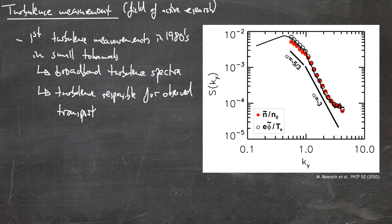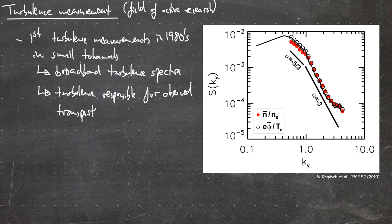The picture on the right-hand side is a spectra of turbulent density and potential fluctuations, measured in the TJK stellarator. You can nicely see in this spectra how a dual cascade is found — what was predicted for a two-dimensional turbulent system. We have the inverse energy cascade here and the direct enstrophy cascade with different slopes. This was measured with Langmuir probes in the TJK stellarator, a low temperature device able to reproduce the theoretical expectations.